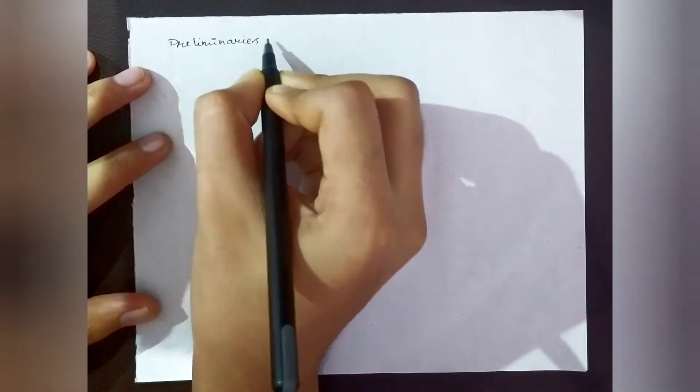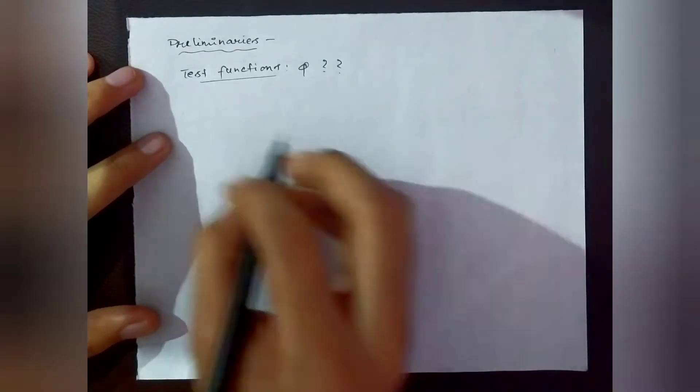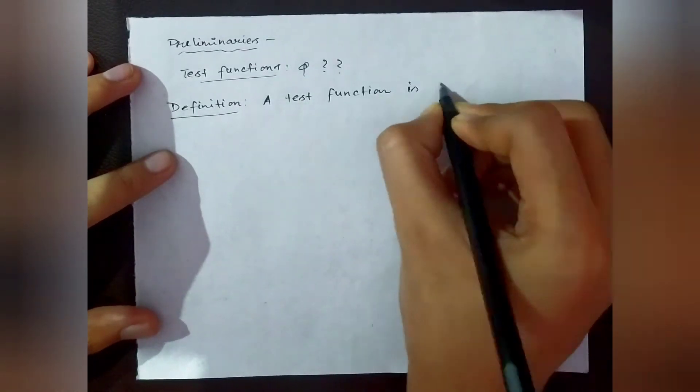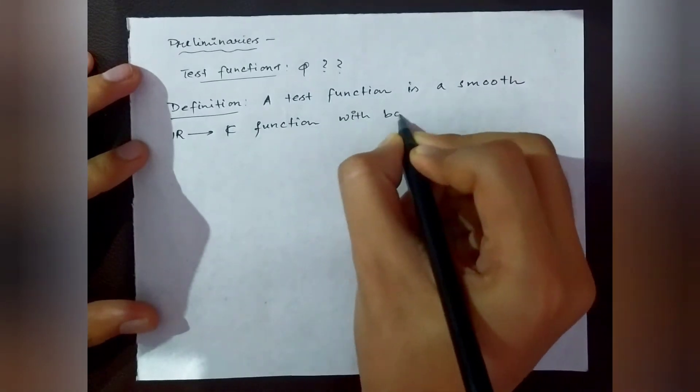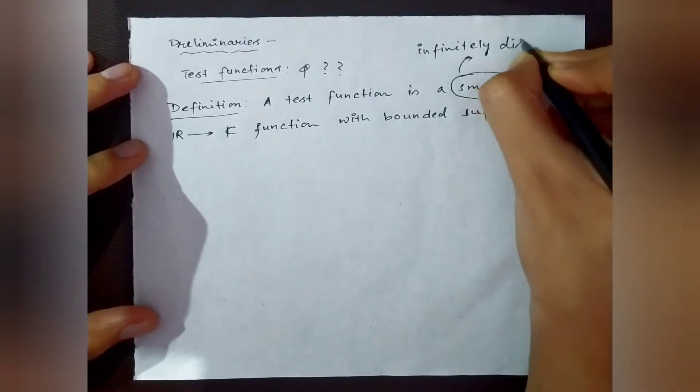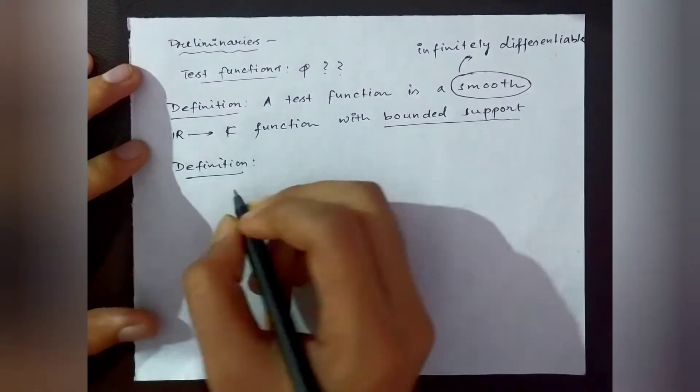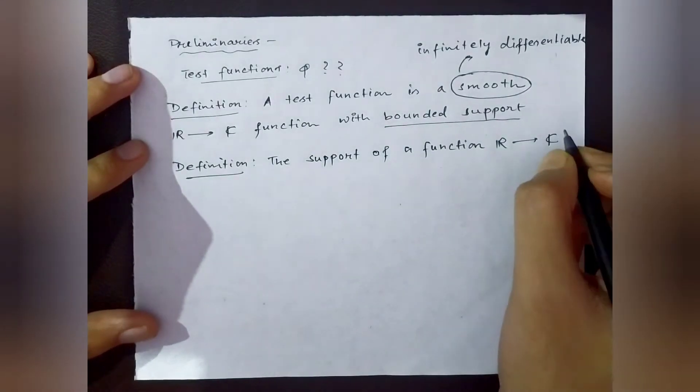We need some preliminaries to give a precise definition of distributions. We start with test functions. A test function is a smooth function with bounded support. Smooth simply means infinitely differentiable, like the exponential function. The support of a function f is the closure of the set of points where the function is nonzero.